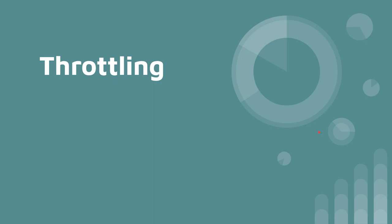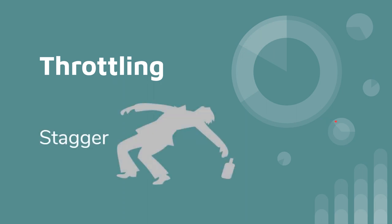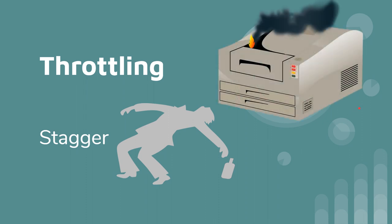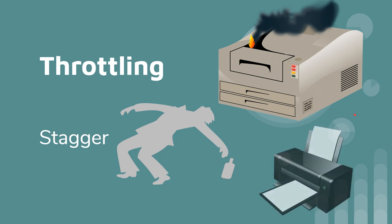Throttling is another term — it basically refers to staggering information output. A way to visualize this: if a printer were printing a thousand documents at once, it would probably blow up. So you'd want to throttle it — stagger the output, print a document every 10 seconds or so. Usually this refers to information output from websites. For example, if a bank website had an unauthenticated page where you enter an account number and it returns your interest rate, you'd want to throttle that output to prevent account harvesting or account farming.